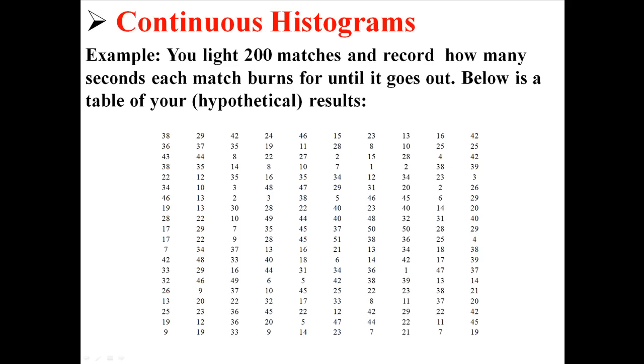Now we want to create a continuous histogram, which is a bit more work. In this example, imagine you light 200 matches and record how many seconds each match burns for until it goes out. Below is a table of your hypothetical results. Here we have 200 different numbers. They seem to be all between about 0 and 50.